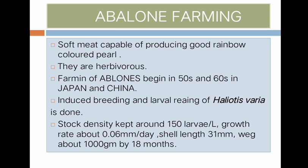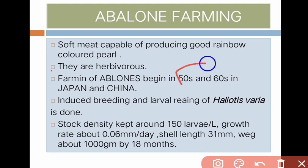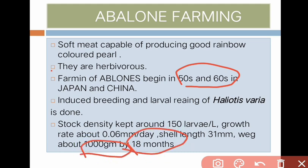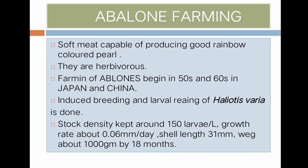Next is abalone farming. Abalone have soft meat and are capable of producing rainbow-coloured pearl. They are herbivorous. Farming of abalone began in the 1950s and 1960s in Japan and China. Induced breeding and larval rearing of Haliotis varia is done. Stock density is kept around 150 larvae per litre. Growth rate is about 0.06 mm per day. Shell length achieved is 31 mm. Weight of about 1000 grams can be achieved by 18 months.